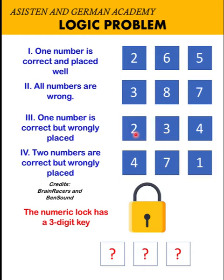Third, one number among 2, 3, and 4 is correct but wrongly placed. And lastly, two numbers from 4, 7, and 1 are correct but are wrongly placed.